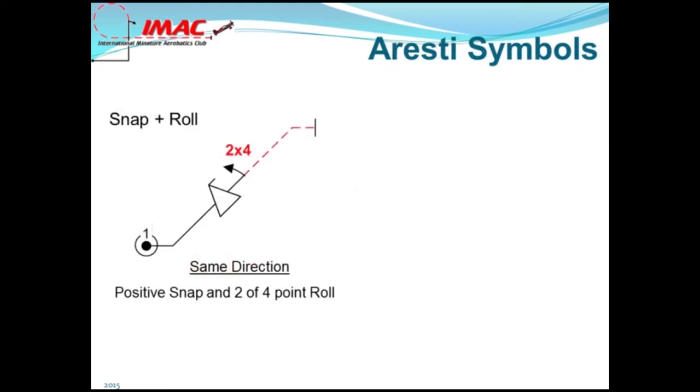In combining a snap roll and an aileron roll, or a roll on the snap, the direction can be the same for both or the opposite. Figure one is a 45-degree upline with a positive snap followed by a same direction two of a four-point roll. Note that the flag from the snap roll is on the same side as the arrow of the point roll. Figure two is a three-quarter positive snap followed by an opposite three of a four-point roll.